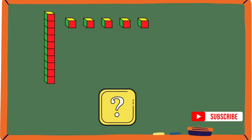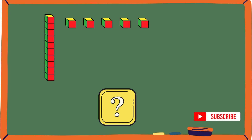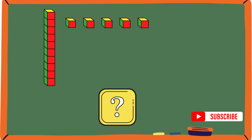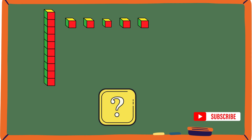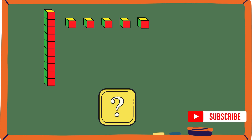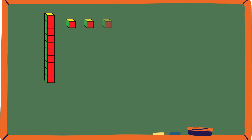Which number is shown by these blocks? Let's count — this big block represents 10, so: 10, 11, 12, 13, 14, 15. That's correct, it's 15!